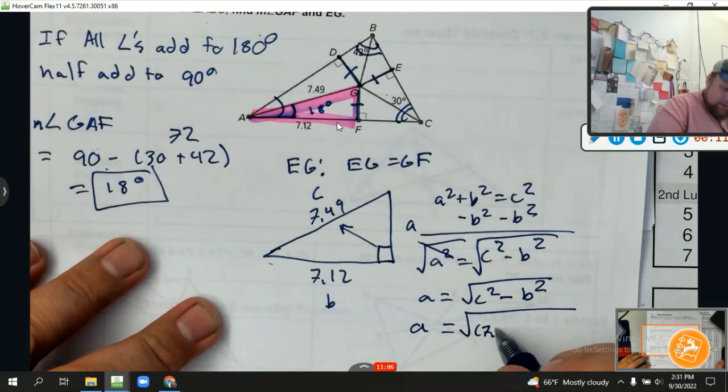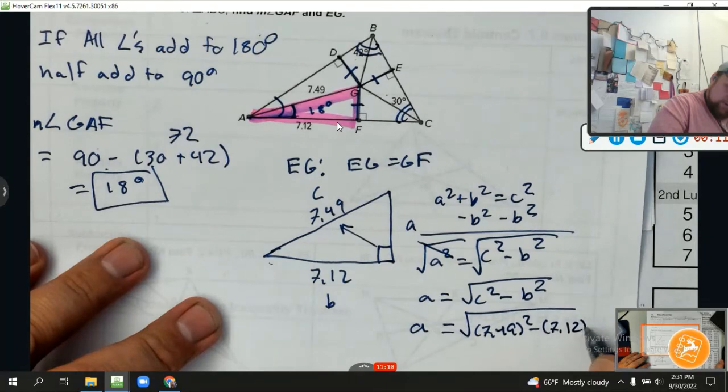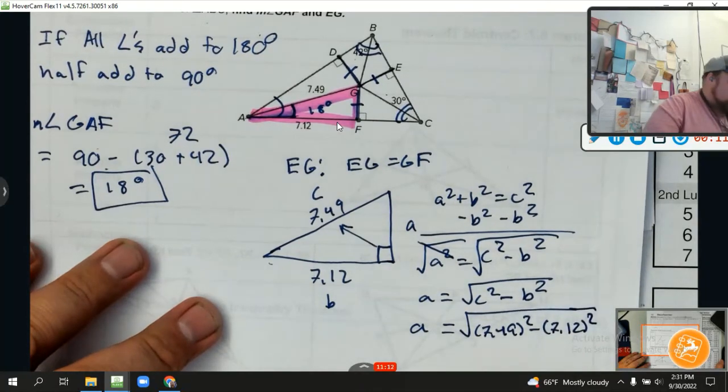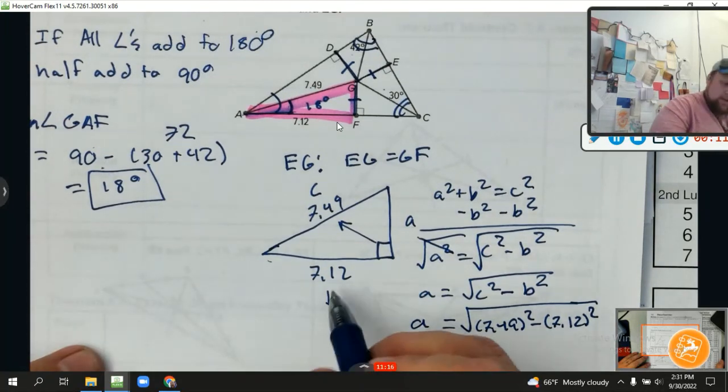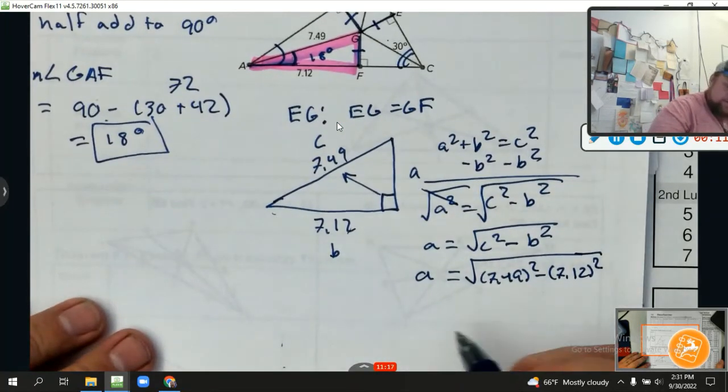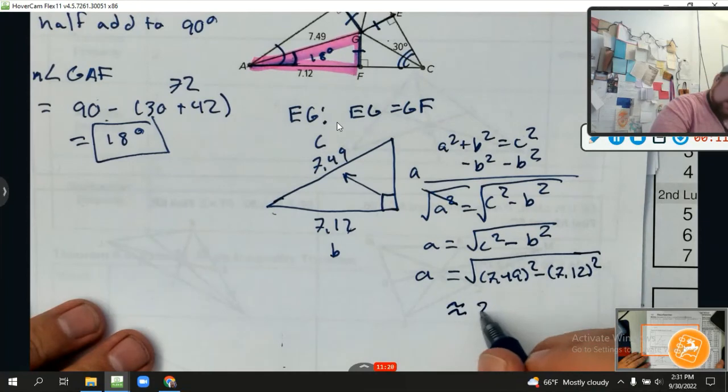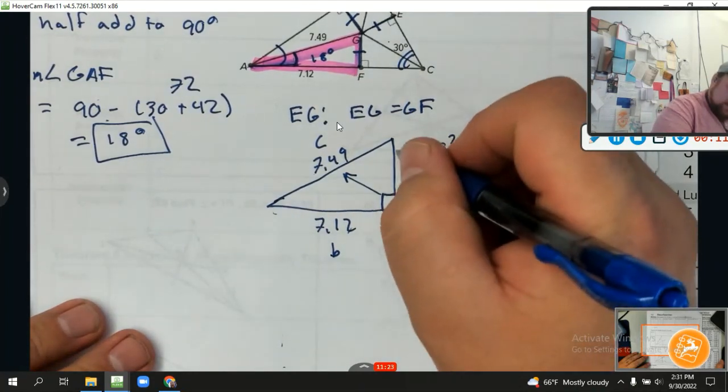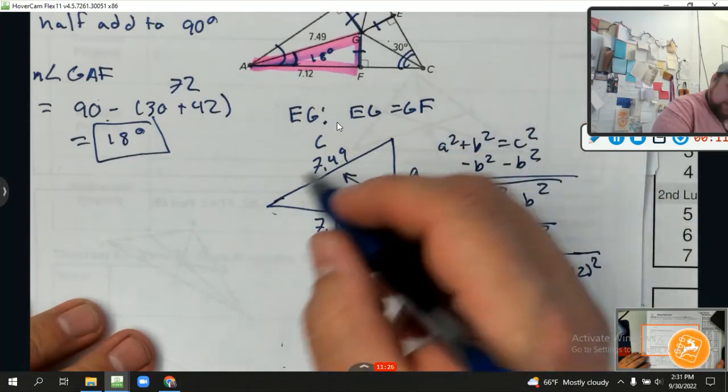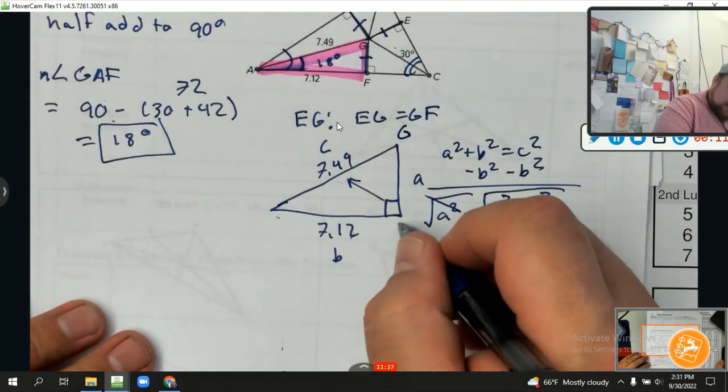Square root undoes the square, and I'm left with a equals the square root of c squared minus b squared. So let's plug in numbers: my a equals the square root of 7.49 squared minus 7.12 squared. We're going to calculate that on a calculator, and I'm going to round it to the hundredths because these are all to the hundredths. This is approximately 2.33.